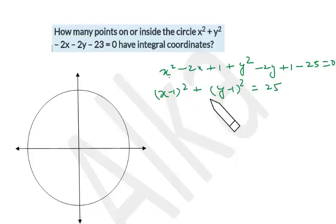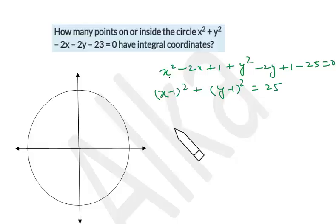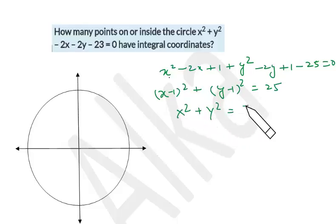So this is (x - 1)² + (y - 1)² = 25. The center of the circle is at (1, 1). To make the calculation simple, since we just want to see the area of the circle and are not interested in the actual location, we can shift the origin and rewrite the equation as x² + y² = 5².